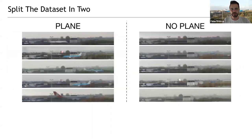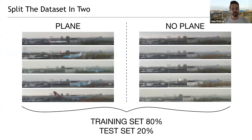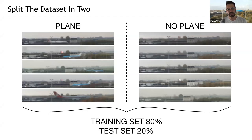Once we have all the preprocessed images, we split the dataset into plane images and no-plane images, label each one accordingly — these are the two classes we're looking for. Then we further split that labeled dataset into a training set and a test set, roughly in a proportion of 80% and 20%. The test set is used after training completes to check how the network behaves with previously unseen images.